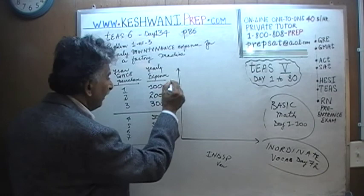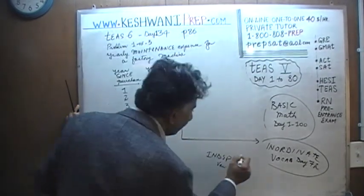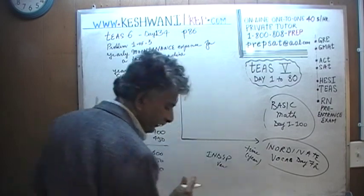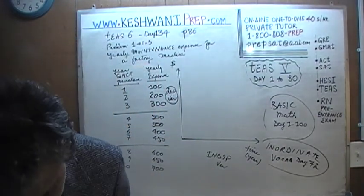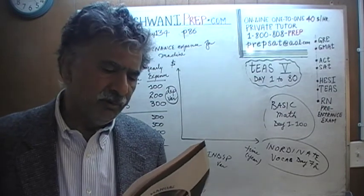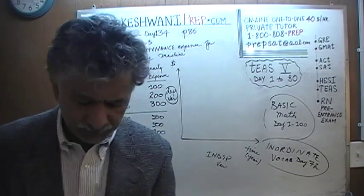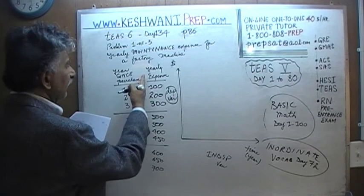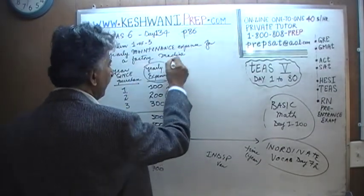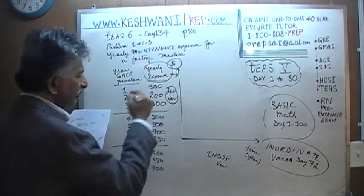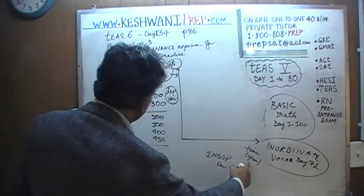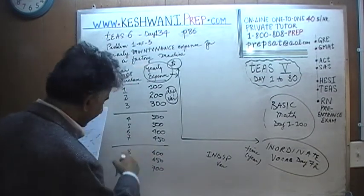Cost is the dependent variable. The dependent variable goes on the y-axis, so our y-axis will show cost in dollars — the yearly expense. On the x-axis we have the independent variable, which is time expressed in terms of years, and we have ten years here.